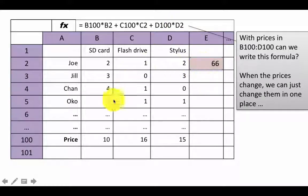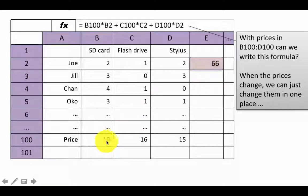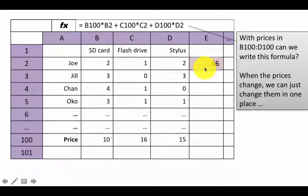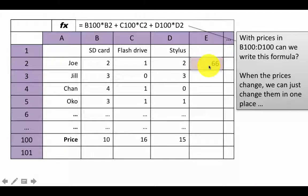We get the same results because the numbers are all the same. The beauty of this approach is that if the prices change, you don't have to update any formula — just change the values in those price cells, and Excel's recalculation takes care of the rest. This looks like a great solution. Having computed the correct total cost for Joe, we now want to copy the formula for all the remaining people.